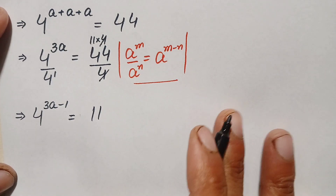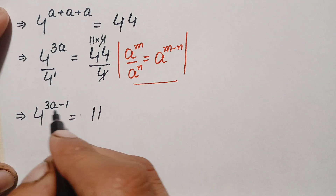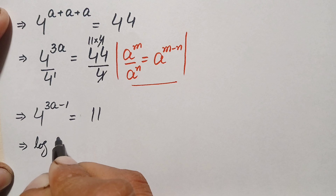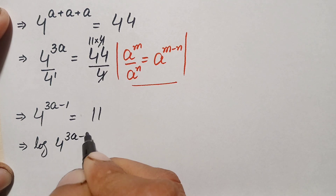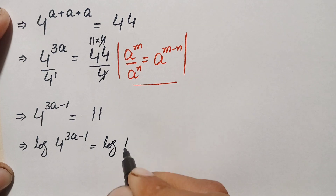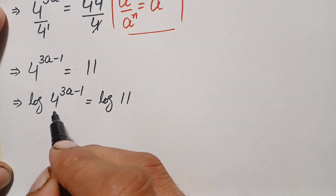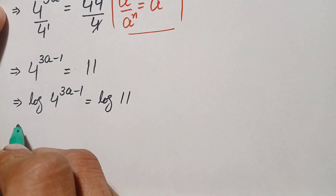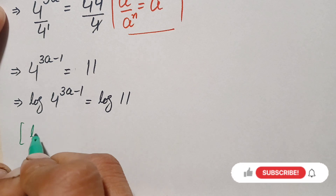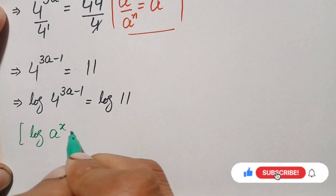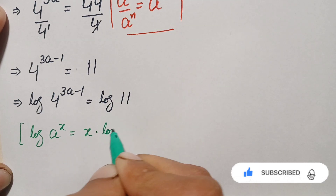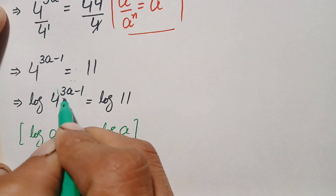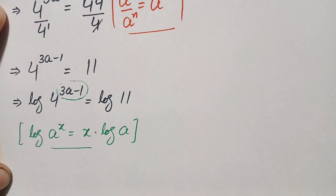Now there is no straightforward way to isolate a, so we take the common log on both sides. This gives log of 4 raised to power (3a − 1) equals log of 11. Using the logarithm identity log(x^p) = p·log(x), we move the power to the front of the log.